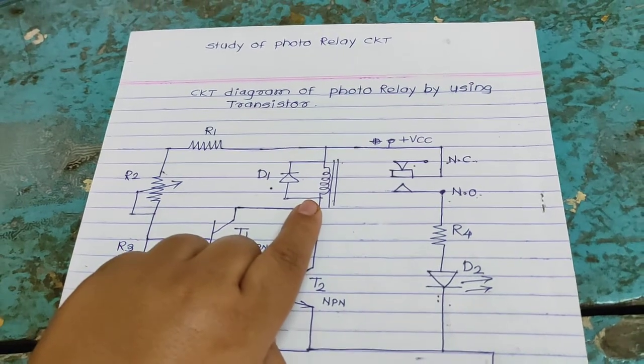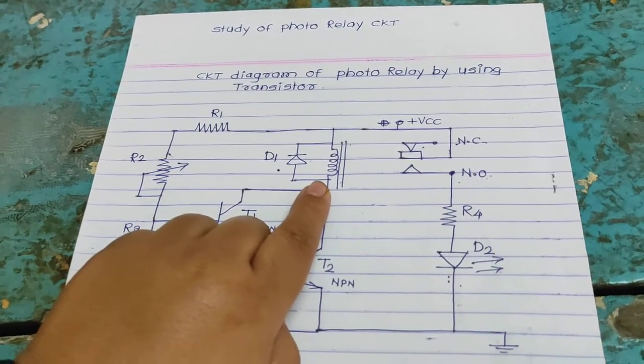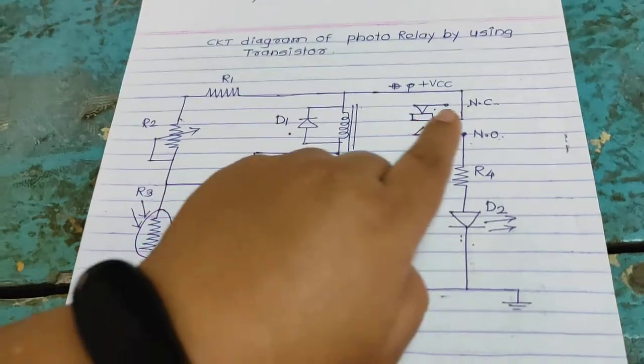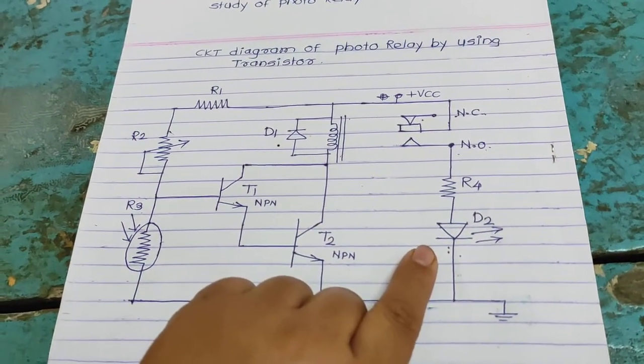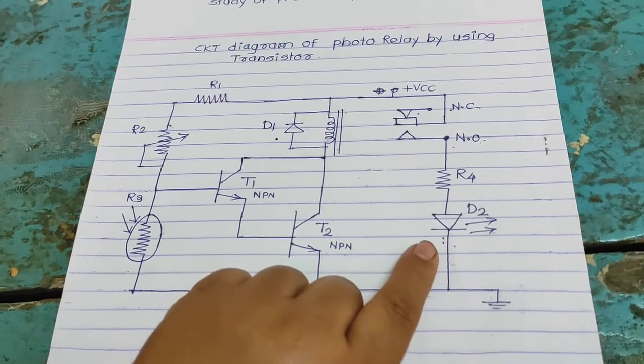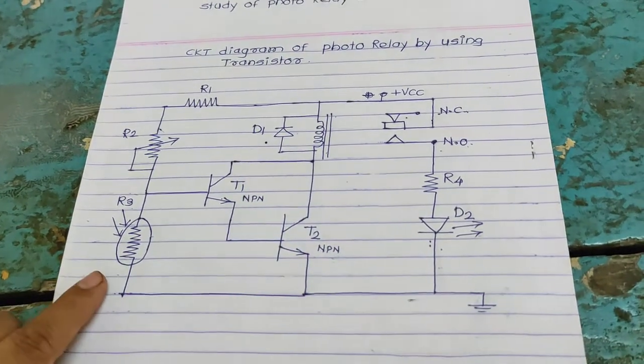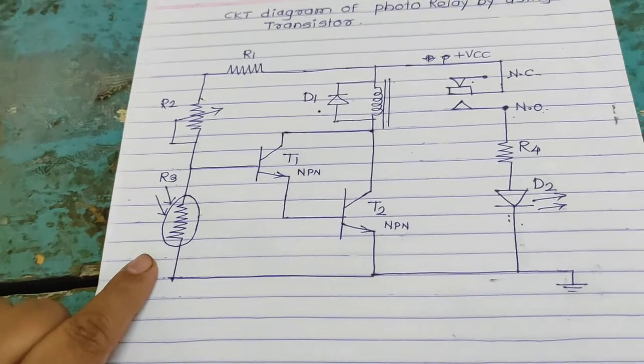Relay is the electromechanical switch that having two terminal, normally closed and normally open. LED is connected to normally open terminal. LED is switching depend upon the light incident on LDR.